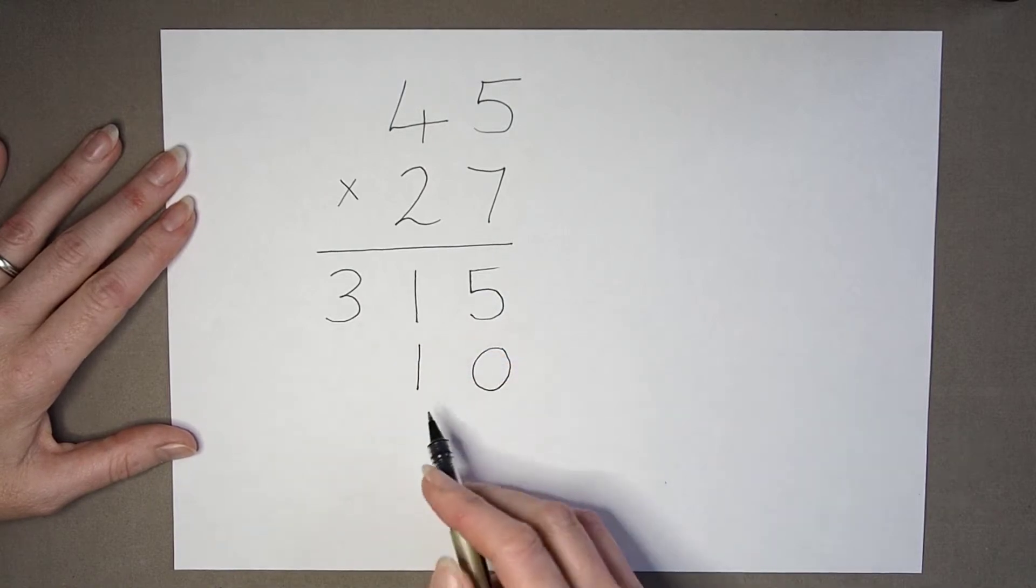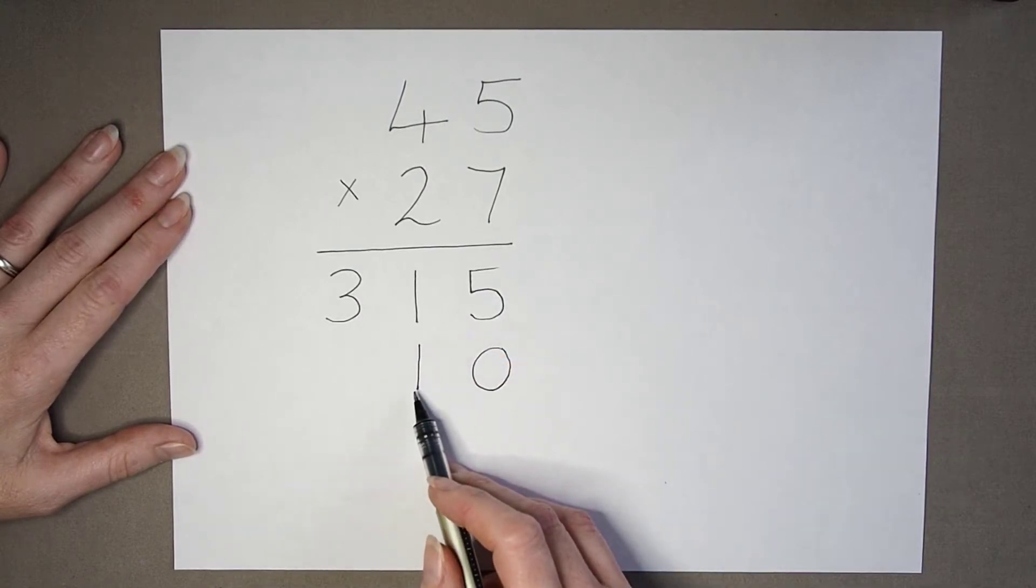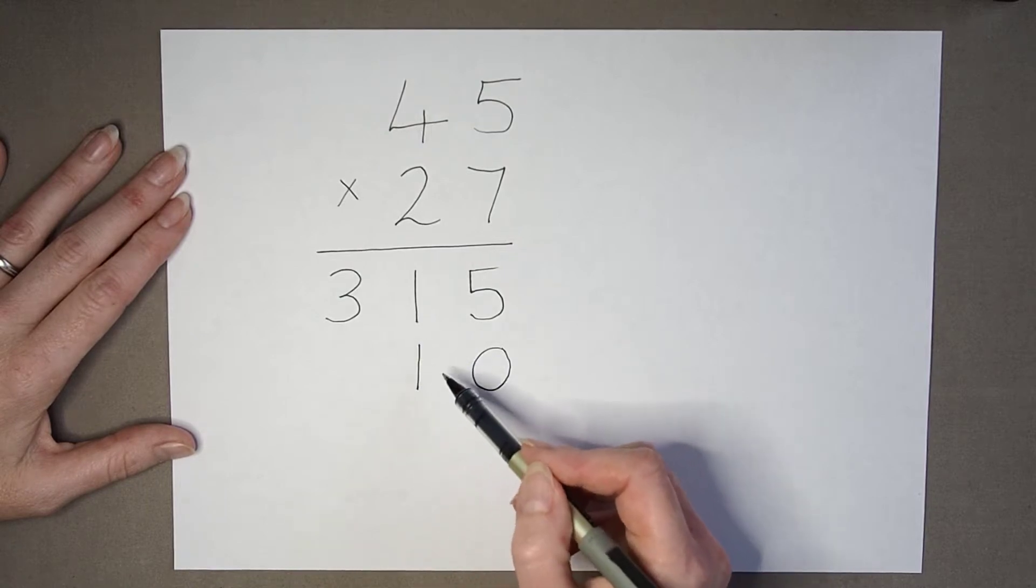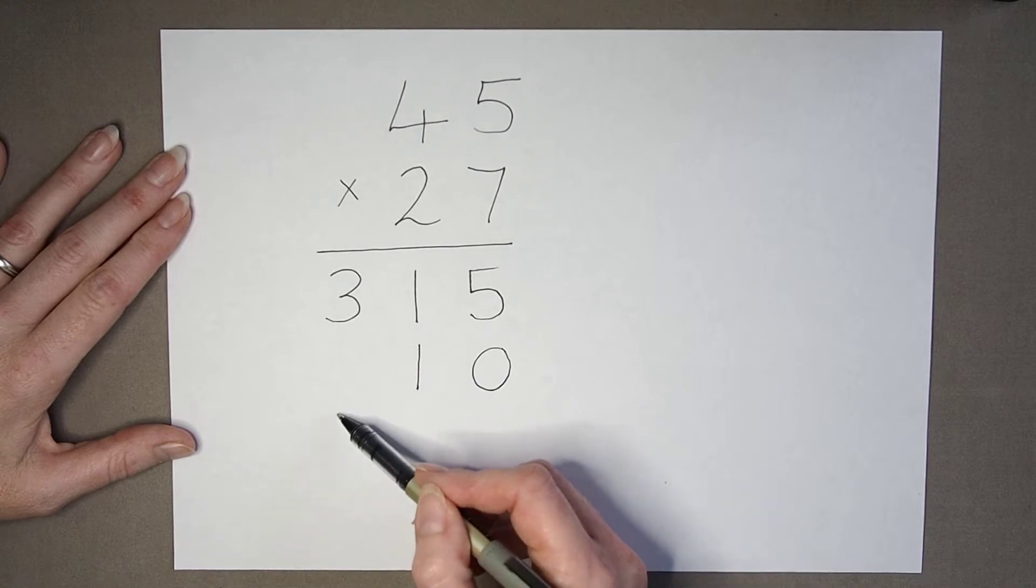they can mistakenly write the 1 in this column, forgetting that they should be putting the 0 from the 10 in this column and carrying the 1.